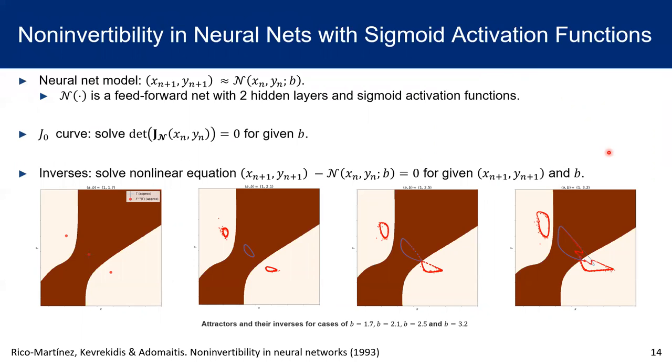Now, we are going to see if a neural net could be able to learn this Euler map of the Brusselator model. Here, our network has three inputs, xn, yn, and b, as well as two outputs, xn plus one and yn plus one. The network consists of two hidden layers, and uses sigmoid function as its activation function. Once it is well trained, we could use the network function to find the evolution of states, fixed point, and Hopf bifurcations. For each value of b, we could also set the determinant of Jacobian equals to zero to get j0 curves. We could also solve the algebraic equation and get the inverses of the points on the attractors.